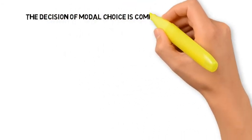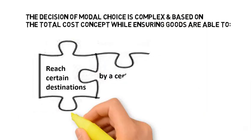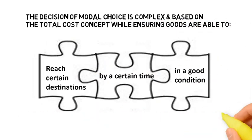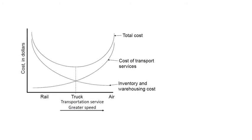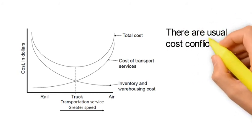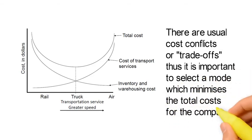The decision of modal choice is complex and based on the total cost concept, while ensuring that goods are basically able to reach the specific destination by a certain time and in good condition. There are usually cost conflicts or trade-offs, so it is important to select a mode which minimises the total cost for a company. Air transport is undoubtedly fast and reliable but is also the most expensive; however, the high transportation cost is offset by lower inventory and warehousing costs. Rail transport is generally low cost but tends to have higher rates of damage, leading to higher warehousing and inventory costs due to the need for more safety stock. The equilibrium point is different for each situation and each country or region.